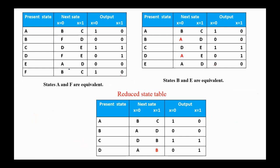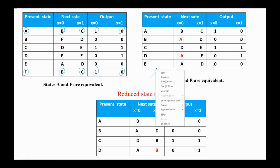Now we look for state reduction if that is possible. We scan the state table: A is not equivalent to B, since the next states under the same inputs are not the same and the generated outputs are not the same. It is not equivalent to C, D, or E, but it is equivalent to F, since under X equals zero the next state is B and the output is one, and under X equals one the next state is C and the output is zero. So we can remove state F and replace all occurrences of F with state A.